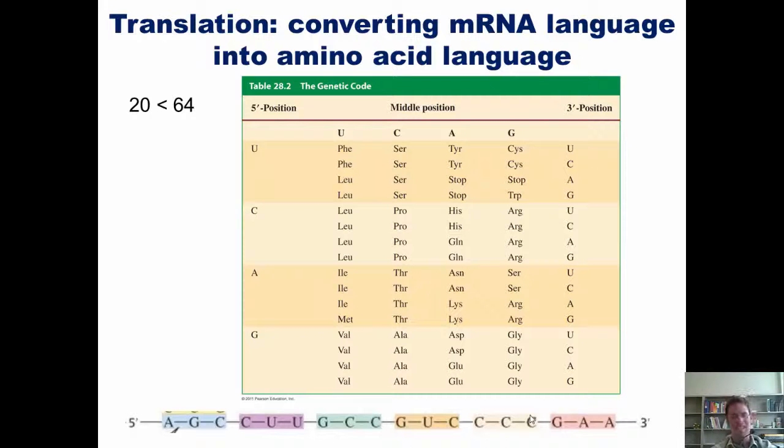Now you might remember me talking earlier about redundancy. And it is exemplified in, for example, you can see that the sequence UUU codes for phenylalanine. UUC also codes for phenylalanine. You can see that UCU codes for serine, as does UCC, UCA, and UCG. So you see there's a lot of redundancy built into this system.